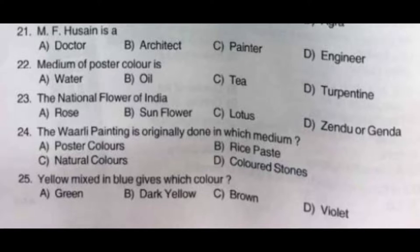Question number twenty-three: The national flower of India — option A: rose, option B: sunflower, option C: lotus, option D: Zendu/Agenda. The correct answer is option C: lotus. Question number twenty-four: The Warli painting is originally done in which medium — option A: poster colors, option B: rice paste, option C: natural colors, option D: colored stones.